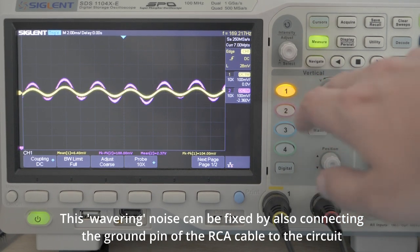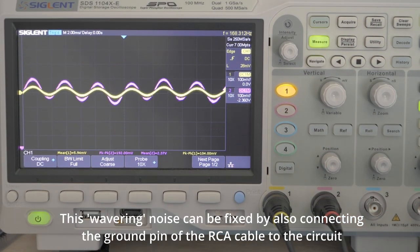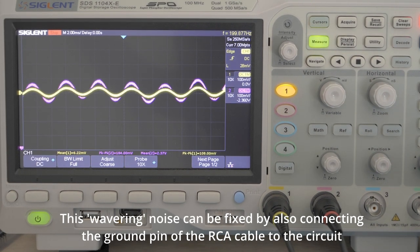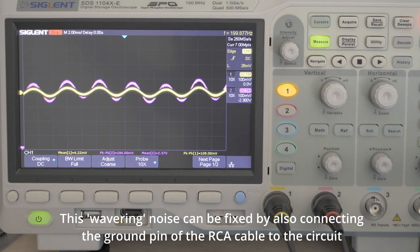but biased and amplified so that it is oscillating around 2.37 volts, with a peak-to-peak of about 190 millivolts.